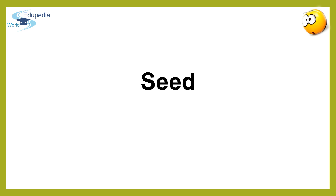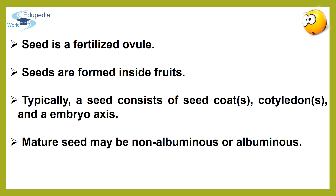We have now completed the structure and development of the dicot and monocot embryo. Let's move on to the next post-fertilization structure: the seed. In angiosperms, seed is the final product of sexual reproduction. It is a fertilized ovule formed inside fruits. Typically, a seed consists of one or two integuments or seed coat, cotyledons and an embryo axis. Mature seeds may be non-albuminous or albuminous. Non-albuminous seeds have no residual endosperm as it is completely consumed during embryo development, commonly found in pea or groundnut. Albuminous seeds retain a part of endosperm as it is not completely used up during embryo development, commonly found in maize, wheat, barley, castor, sunflower, etc.